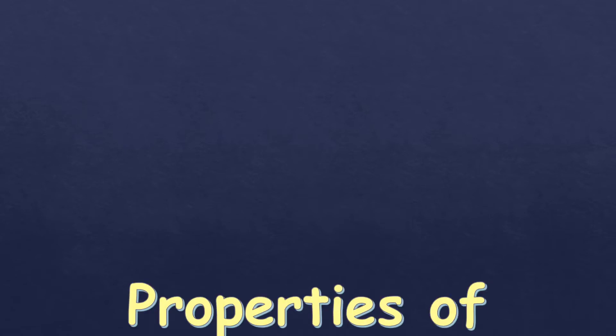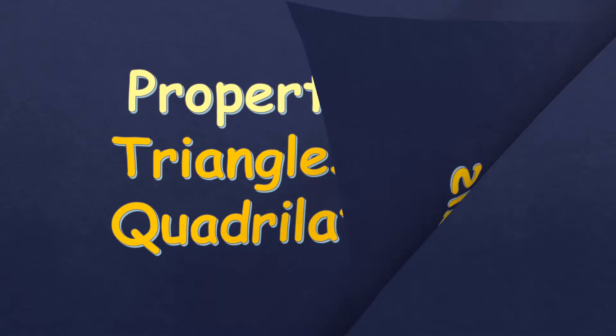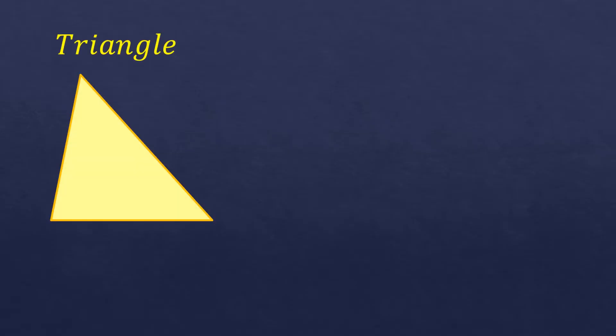In this video, I'm going to talk about properties of triangles and quadrilaterals. Let's talk about triangles. There are different kinds of triangles, and each of them has different properties. But we're going to talk about the properties which are in general for a triangle.